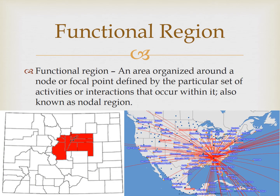A functional region is an area organized around a node or focal point, defined by the particular set of activities or interactions that occur within it, also known as a nodal region. A node is a central point where the functions are coordinated and directed. Since it's organized around a focal point or node, the most ideal shape for a functional region would be a circle — but that doesn't happen very often in real life.